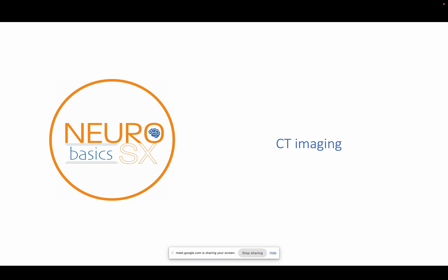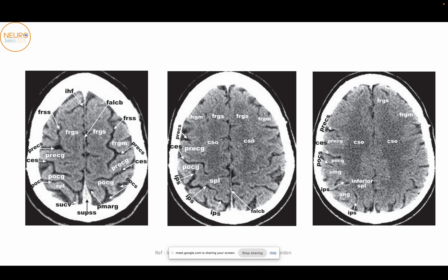Good afternoon everyone. We'll be starting again with this class on neuroradiologic anatomy part 5, and today we'll be covering CT imaging. We'll be starting off with the axial sections, and this is going to rely a lot on what we've already learned previously with the MRI anatomy. It is quite the same except there are a few things you'll be able to pick out with CT as compared to an MRI.